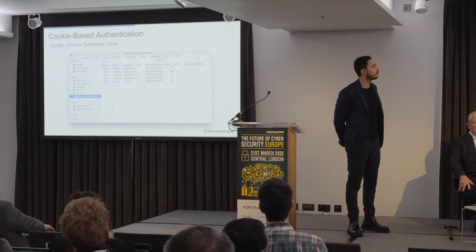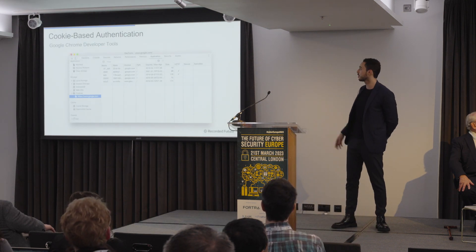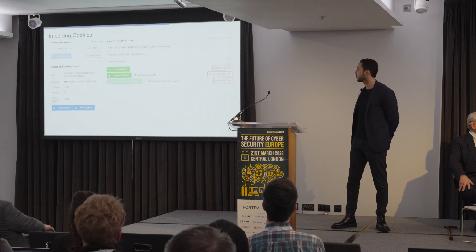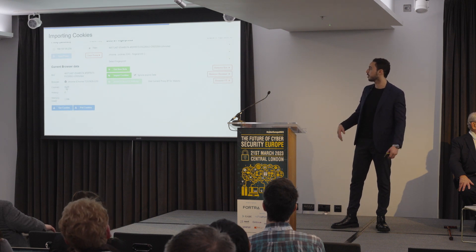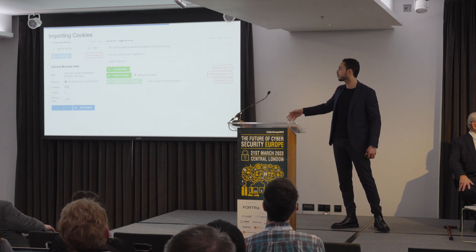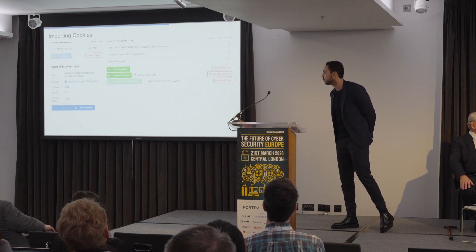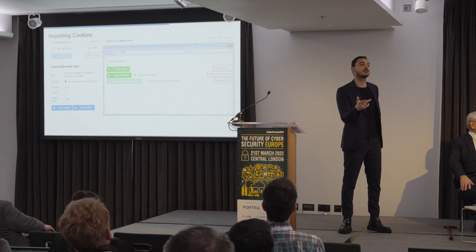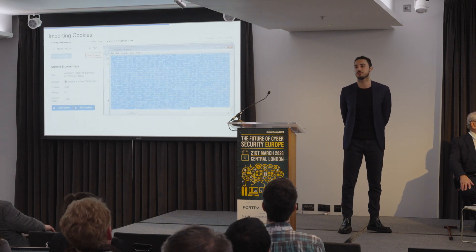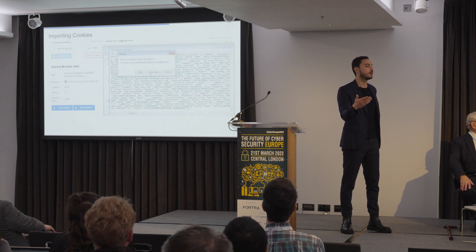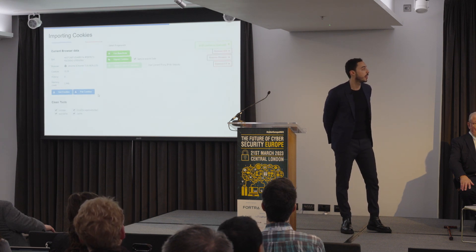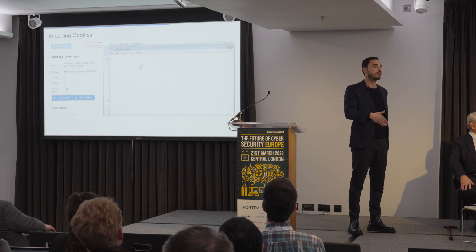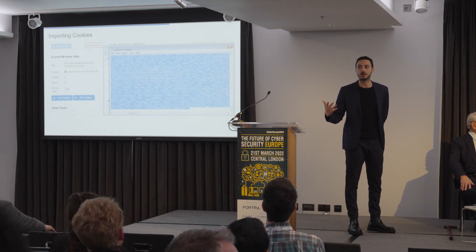What a threat actor then does is grabs those cookies. This is Google Chrome's developer tools — it's very easy to use. You can load up cookies quite simply. The threat actor simply takes all 3,000 cookies that this individual has, downloads them, and then can load them into a browser plugin that the market actually has, which makes it really, really easy to use. Once you've imported the cookies into that plugin, you are essentially browsing as if you are that individual.